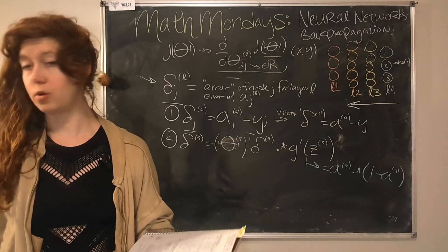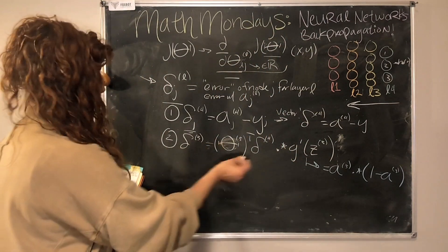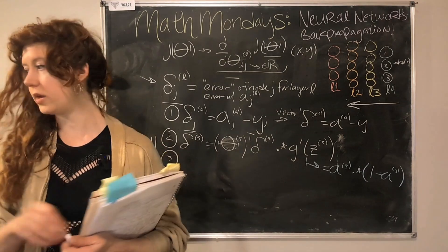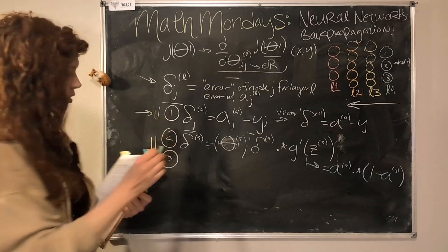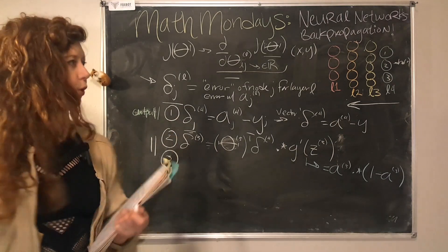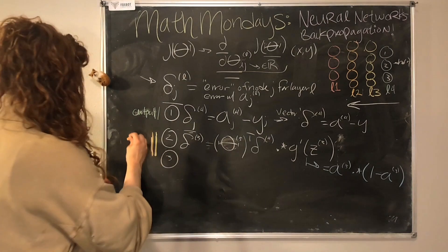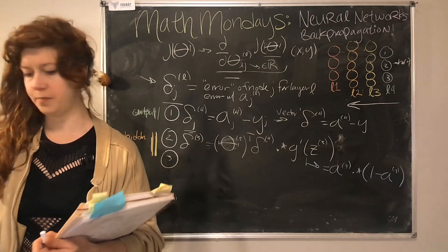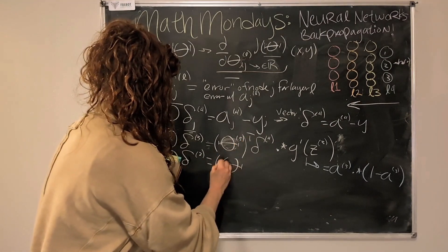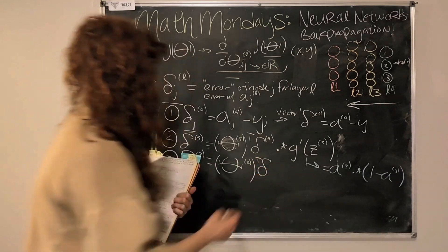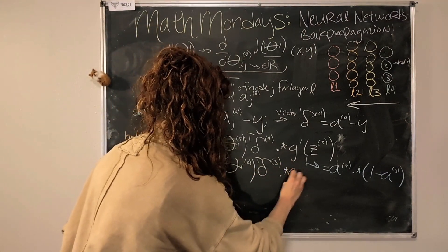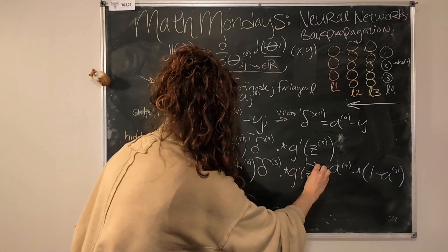The next layer is basically the exact same as the third layer — both are hidden layers, so all hidden layers will look like this. For layer two, we take the transpose of the parameter matrix for layer two, multiply by delta three, then dot star the derivative of the sigmoid function for the second layer. And you do not compute the error for the first input layer. That's because these are your actual input values — your training examples fed into the network — so those values match exactly.